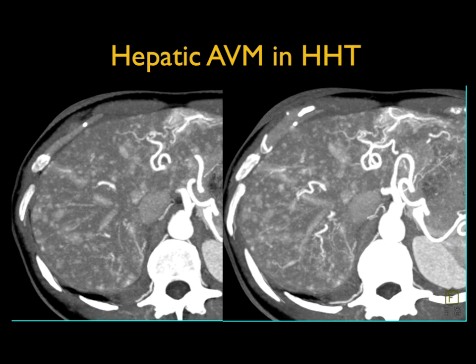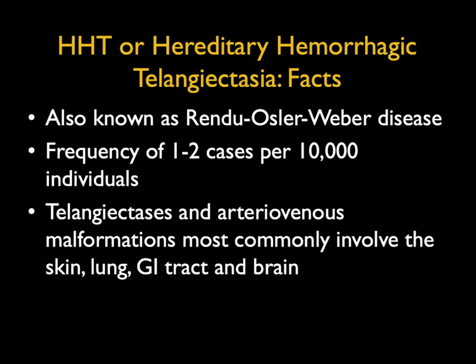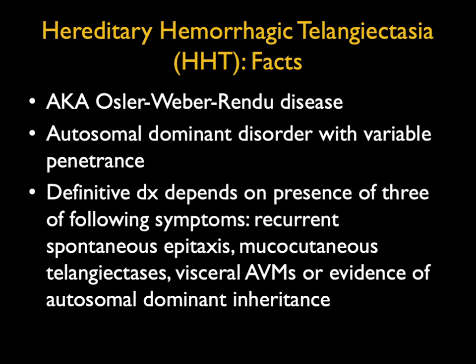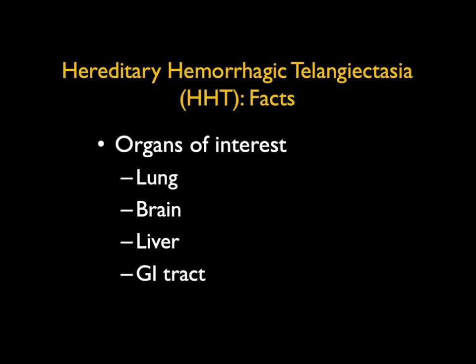One entity that gives you multiple, almost too numerous to count, small aneurysms or telangiectasias — or AVMs — is HHT disease. On arterial phase imaging, you see this incredible appearance of multiple areas of AV shunting and telangiectasias, which quickly become isodense on venous phase imaging. This is also known as hereditary hemorrhagic telangiectasia or Rendu-Osler-Weber disease. These telangiectasias and AVMs can involve the skin, lung, GI tract, and brain. When doing arterial phase imaging looking for PAVMs to embolize, it's not uncommon to see liver involvement. Those lesions becoming isodense on venous phase is very important to recognize.